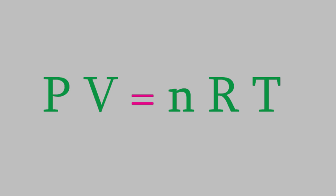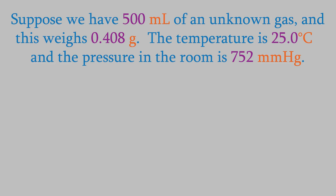So the ideal gas law allows us to find the pressure, volume, temperature, or moles of any gas if we know the other three. But there's more that we can do with this equation, and this is what makes it especially useful. Suppose we have 500 mils of an unknown gas and it weighs 0.408 grams. The temperature in the room is 25 degrees Celsius, and the pressure is 752 millimeters of mercury. With that information, we can figure out what the gas actually is.